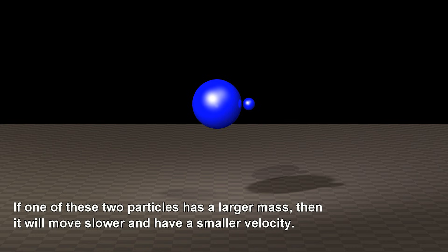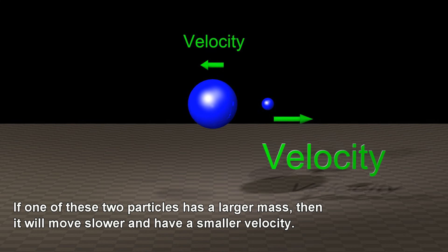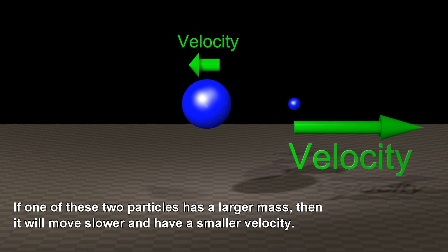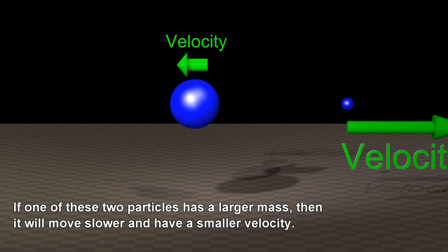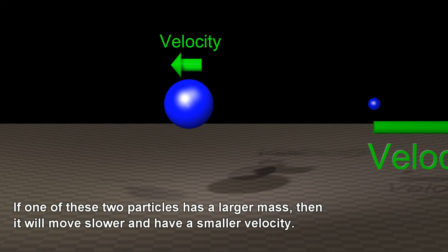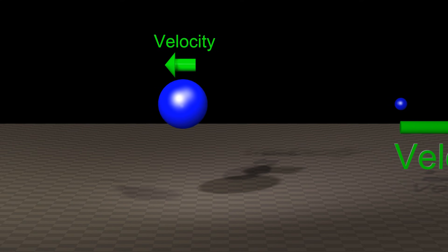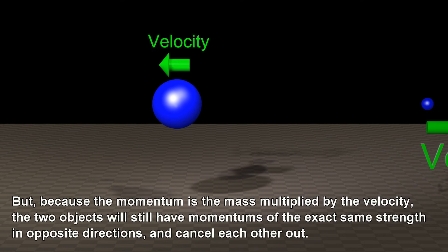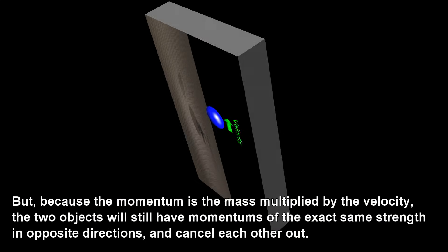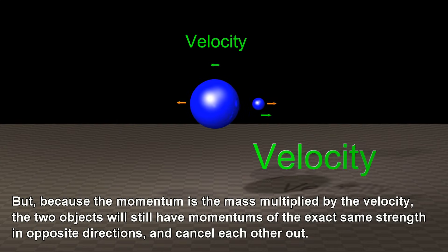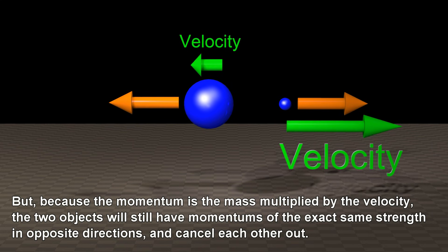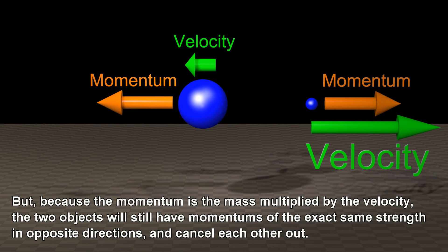If one of these two particles has a larger mass, then it will move slower and have a smaller velocity. But because the momentum is the mass multiplied by the velocity, the two objects will still have momentums of the exact same strength in opposite directions and cancel each other out.